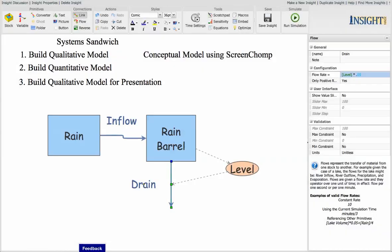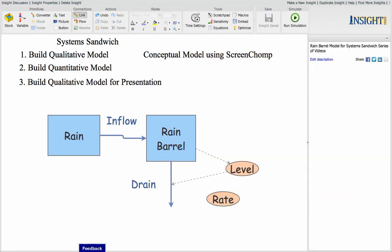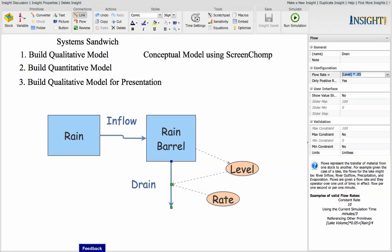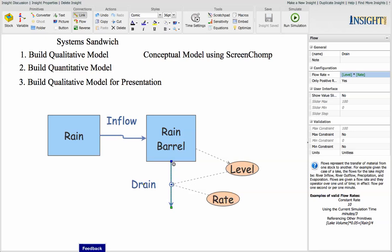Another way to do this is to create a variable that's the rate. We're going to go ahead and do that. So we're going to put in a rate. The rate is going to be 0.05 just like we put into the equation. But this time we're going to link the rate with the drain here. And we're going to change the equation so that instead of burying the assumption, we're going to use the rate here. So the level in the rain barrel times the rate is going to be the drain.